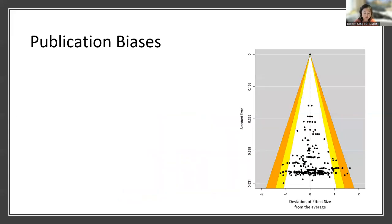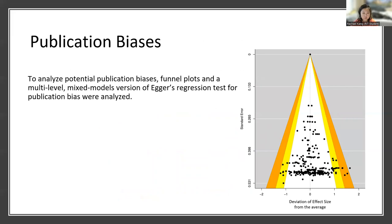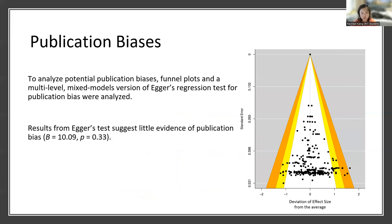Once again, following PRISMA methods for meta-analyses, publication bias analyses were conducted using Egger's regression test. Results suggested little evidence of publication bias, and adjusting for these only improved the results slightly.